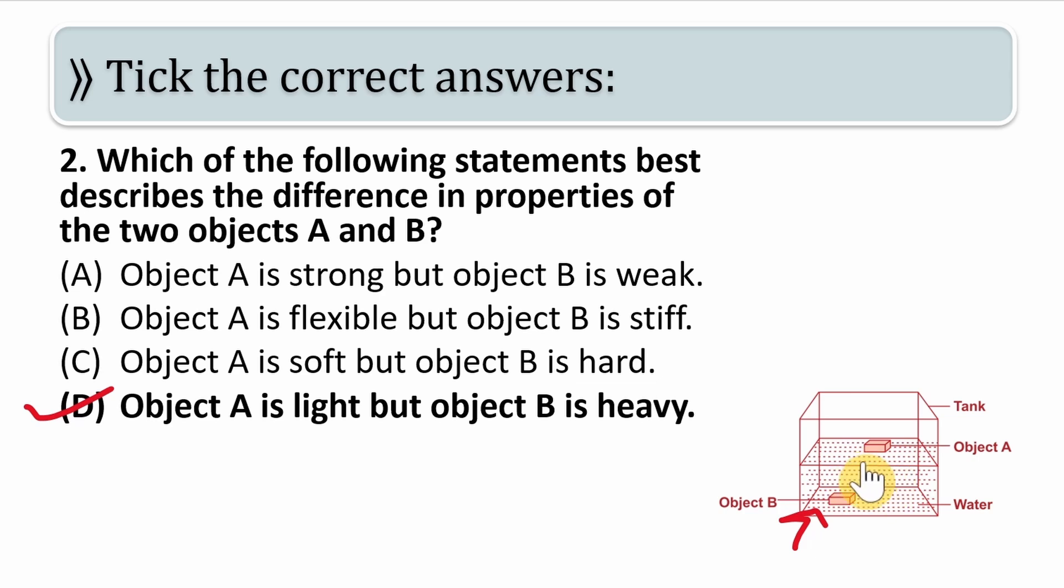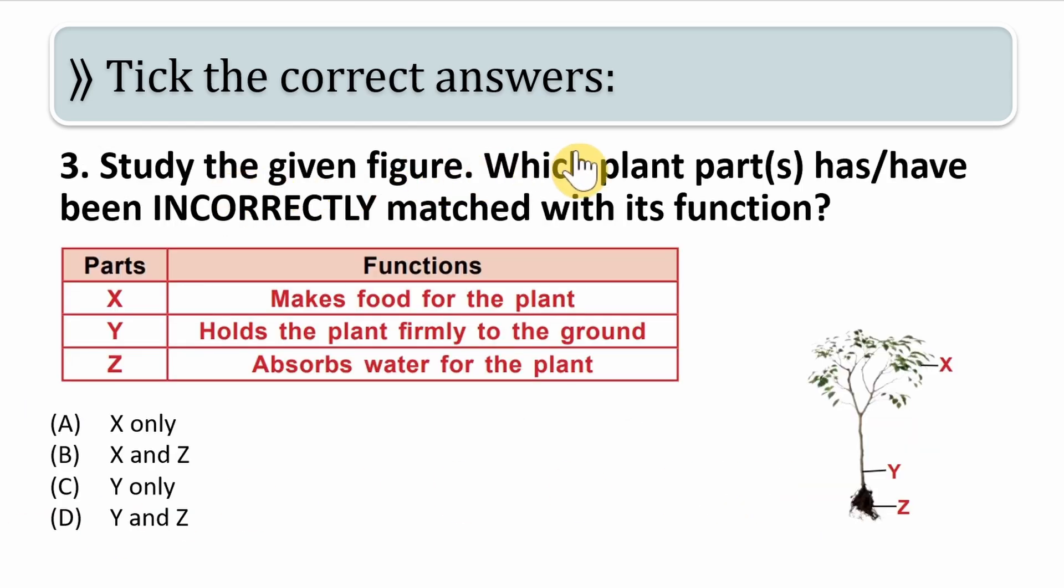Let us move on to the next question. Study the given figure. Which plant parts have been incorrectly matched with its function? There are different parts X, Y, Z. X where leaves are shown makes food for plants. Y, the stem, holds the plant firmly to the ground. Z, the roots, absorbs water from the plant. Your time starts now.